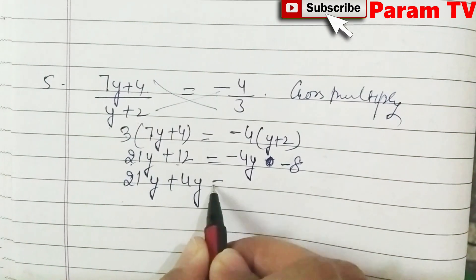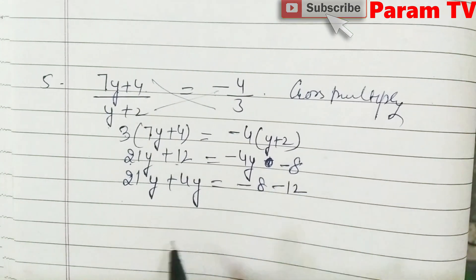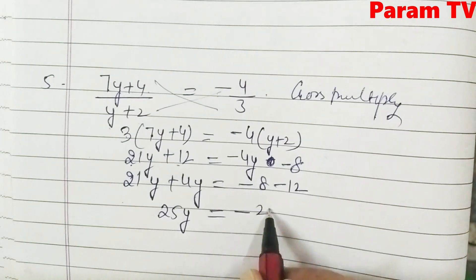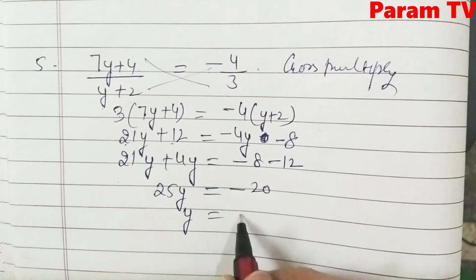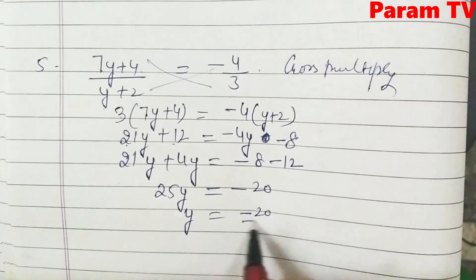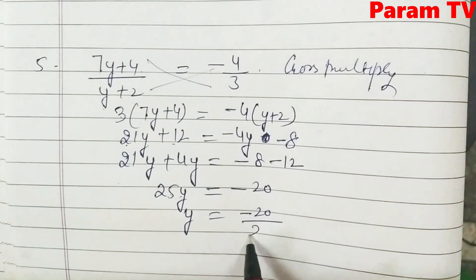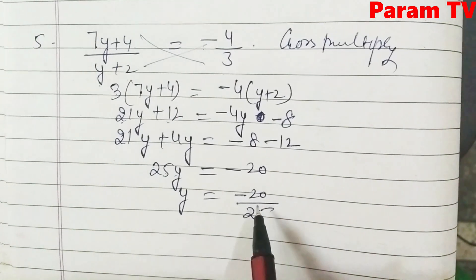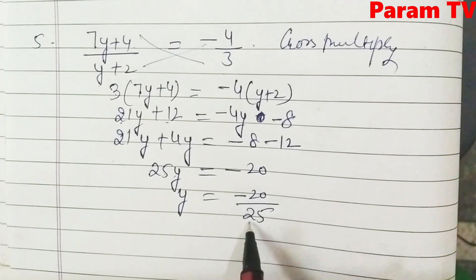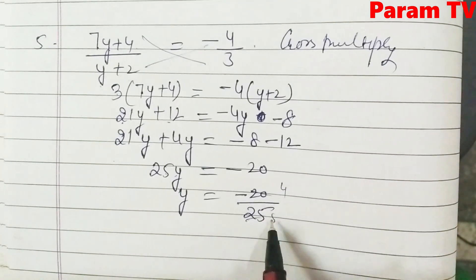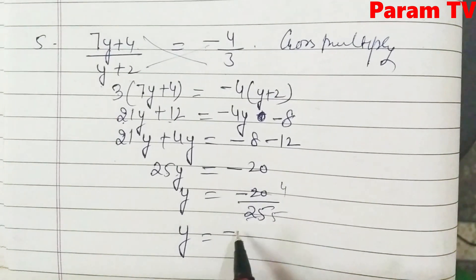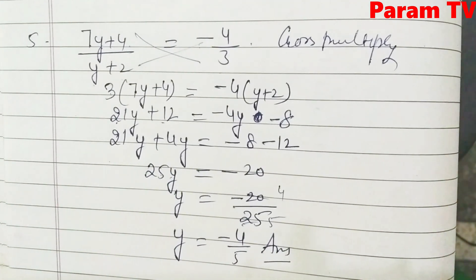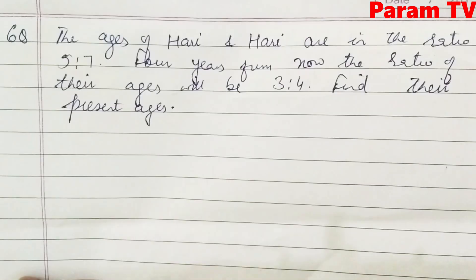So 21y + 4y = −8 − 12, giving 25y = −20. Therefore y = −20/25. Both terms are in the table of 5, so y = −4/5. This is the required solution.